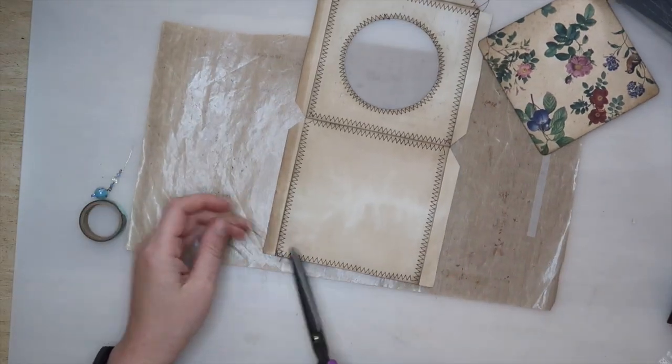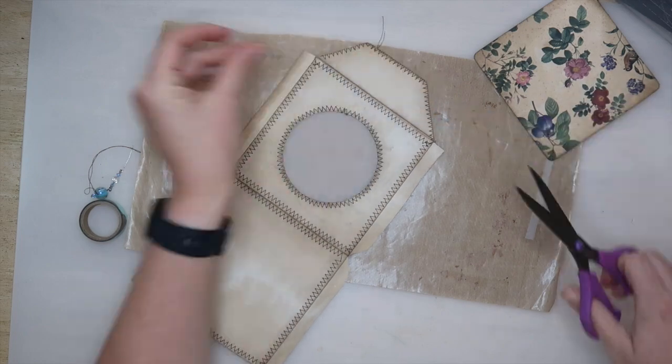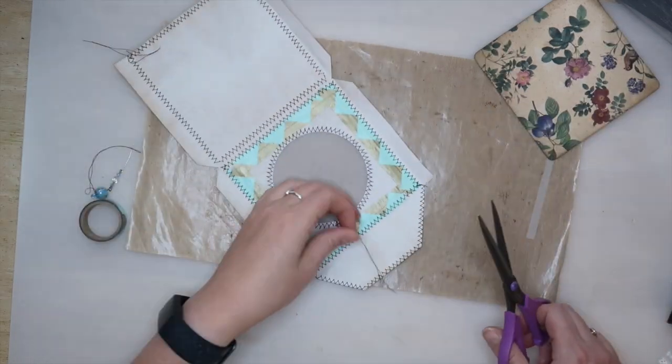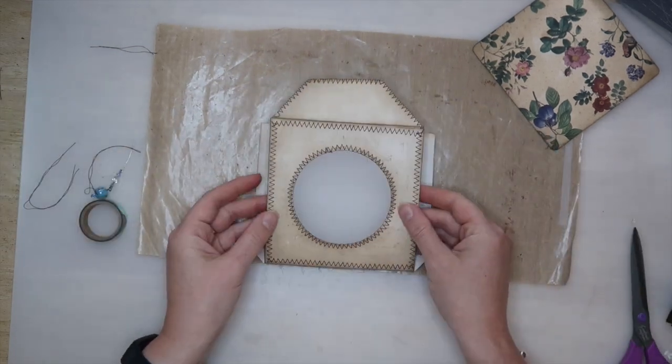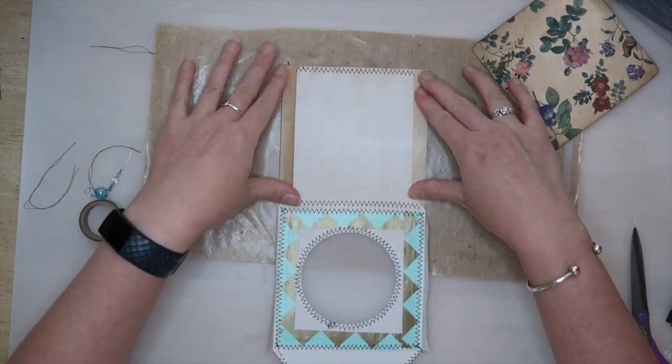At this stage I took the envelope to the sewing machine and added a zigzag stitched border around all sections of the envelope and around the aperture as well. This added extra texture and detail as well as some more security holding the vellum down.